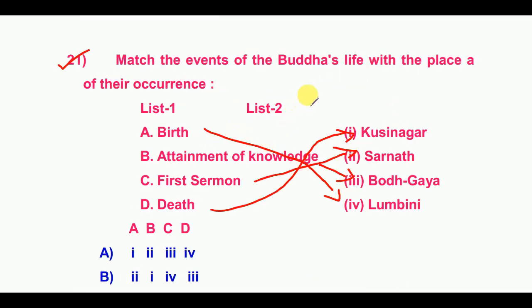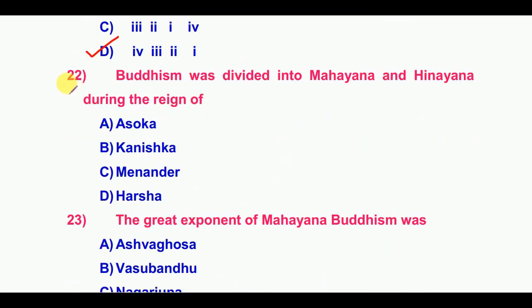These are all the key places in Buddha's life. Twenty-second question: Buddhism was divided into Mahayana and Hinayana during the reign of whom? The answer is option B: Kanishka.